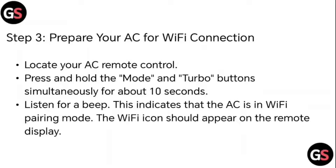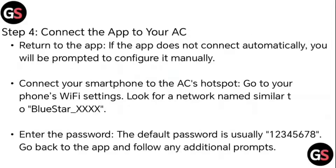Step 3: Prepare your AC for Wi-Fi connection. Locate your AC remote control. Press and hold the mode and turbo button simultaneously for about 10 seconds. Listen for a beep — this indicates that the AC is in Wi-Fi pairing mode. The Wi-Fi icon should appear on the remote display.